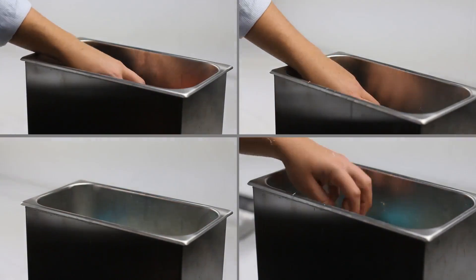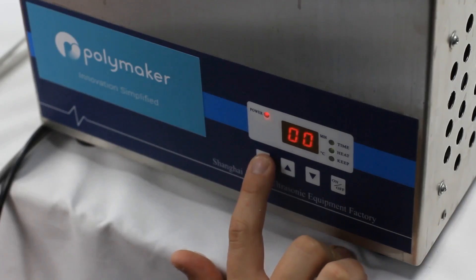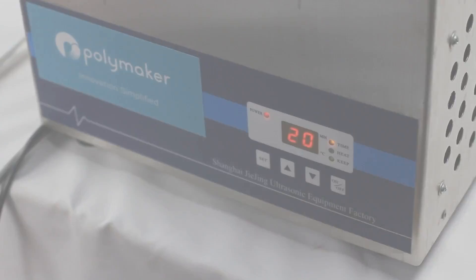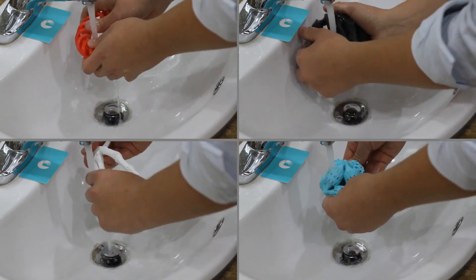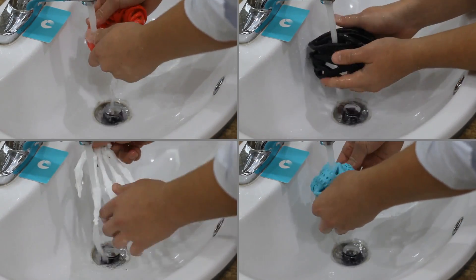Resubmerge your model back into the alcohol bath, turn on the ultrasound and limit the temperature to 50 degrees C. The model now needs a further hour for the remaining support to completely dissolve away.